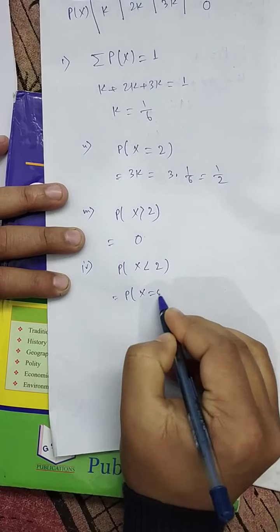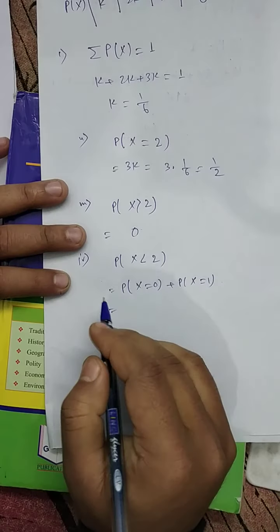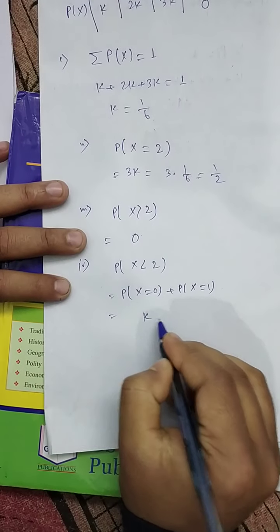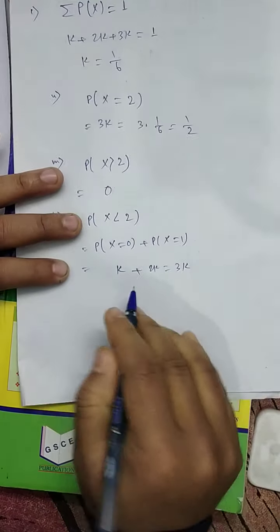We can take P(X = 0) + P(X = 1), which equals K + 2K = 3K, so 3 × 1/6 = 1/2.